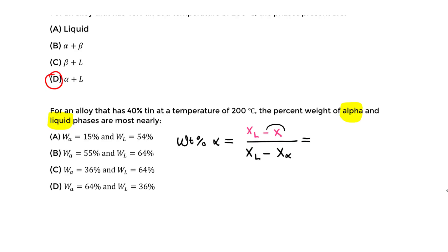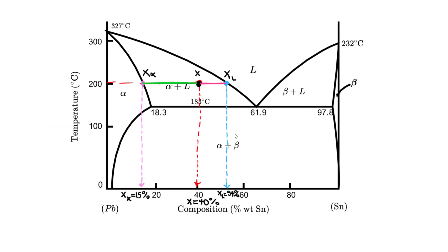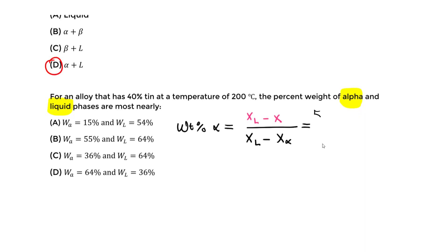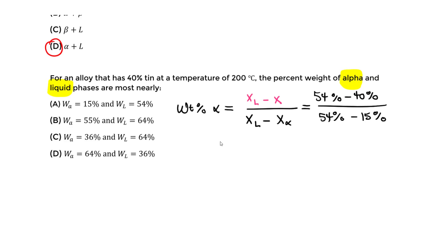Plugging in the values for alpha: (54% − 40%) divided by (54% − 15%). That gives a weight percent of alpha of approximately 36%.